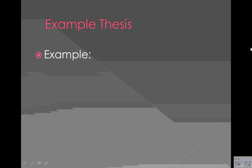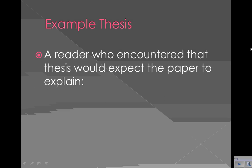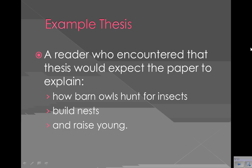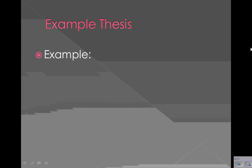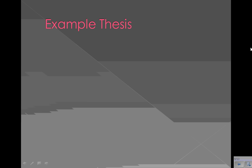Let's look at an example thesis. The example is: 'The lifestyles of barn owls include hunting for insects and animals, building nests, and raising their young.' This expository essay would inform the reader about the lifestyles of barn owls. From this thesis, a reader would be able to tell that this paper was going to explain how barn owls hunt for insects, how they build nests, and how they raise their young. So you can see that thesis explains what they're going to tell us about — barn owl lifestyles — the three categories, and the order.